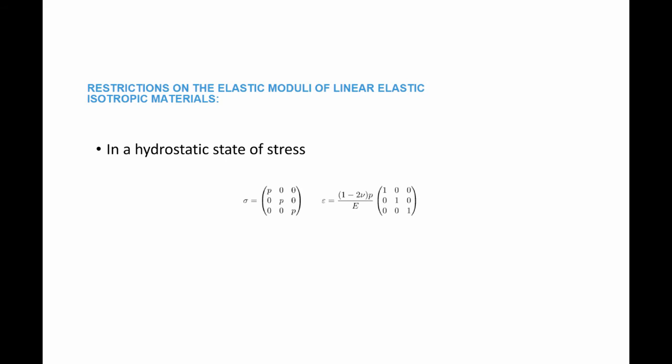In a hydrostatic state of stress, the stress is given by a matrix with values of p, p, and p on the diagonal and everything else zero; the corresponding strain is given by the matrix shown here. Multiplying each stress component by the corresponding strain component, adding the three values, and multiplying by one half because of the linearity between stress and strain gives this relationship. This number has to be greater than zero, which implies that Poisson's ratio has to be less than one half.